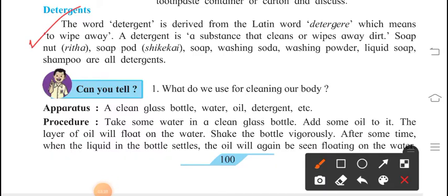Next substance which we are using in our day-to-day life that is detergent. The word detergent is derived from Latin word detergere, which means to wipe away. A detergent is a substance that cleans or wipes away dirt. Soap nut which is rita. Ask your parents what are rita. That is soap nut. Soap pod is shikakai. You can also ask in the previous days, like in our parents time, to clean the hair, to clean the dirt on clothes. They use rita or shikakai. Ask them. They know very well. Shikakai rita. So, for shikakai we are using soap pod and for rita we are using soap nut. Soap, washing soda, washing powder, liquid soap, shampoo, all are detergents.